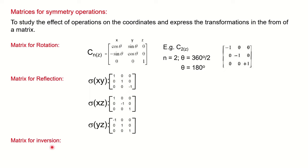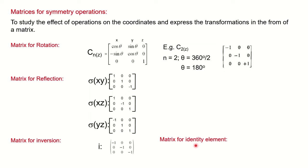Matrix for inversion: after performing inversion, there will be changes with respect to all axes X, Y, and Z — therefore all diagonal values are −1. Matrix for identity element: after performing this operation there is no change with respect to X, Y, or Z — doing nothing to the molecule — so for the identity element all diagonal values are +1.